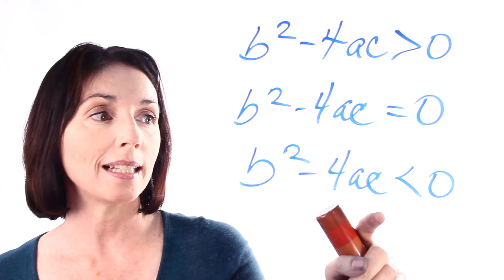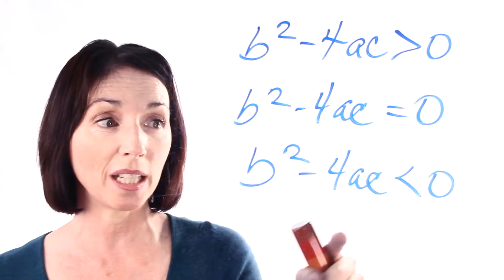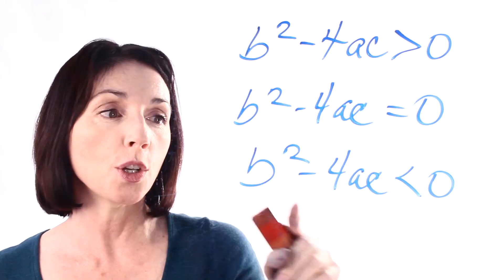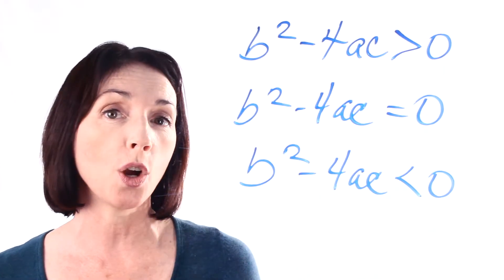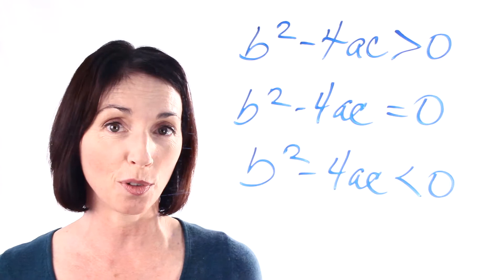And if b squared minus 4ac is less than zero, it means that you have no real roots because don't forget you're trying to take the square root of this in the formula. So b squared minus 4ac being less than zero means that you have no real roots, or in other words, no solutions in the set of real numbers.